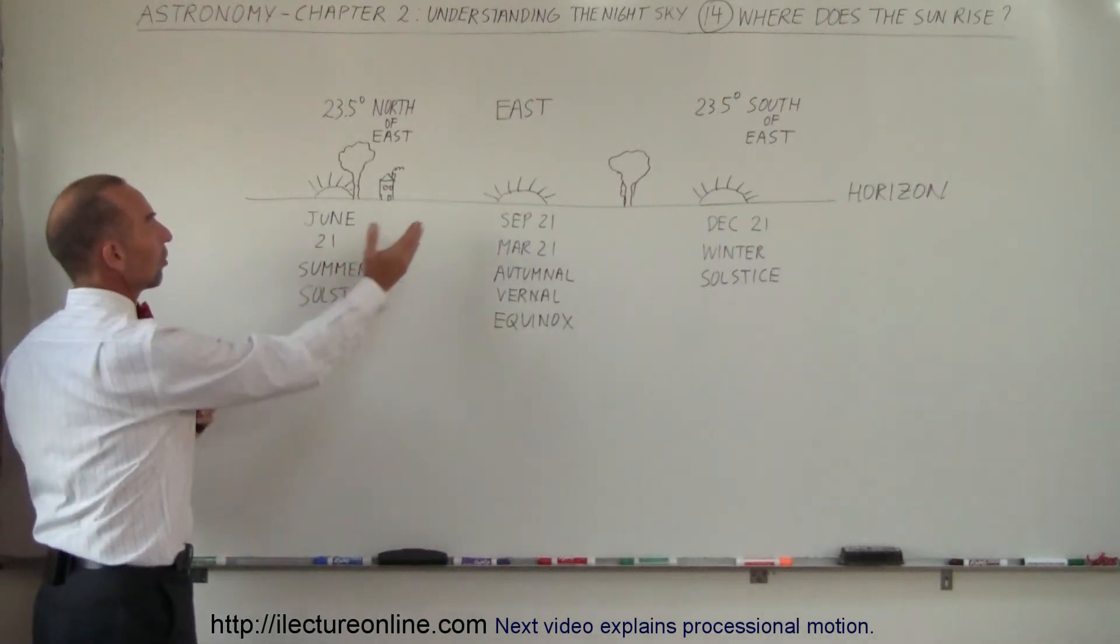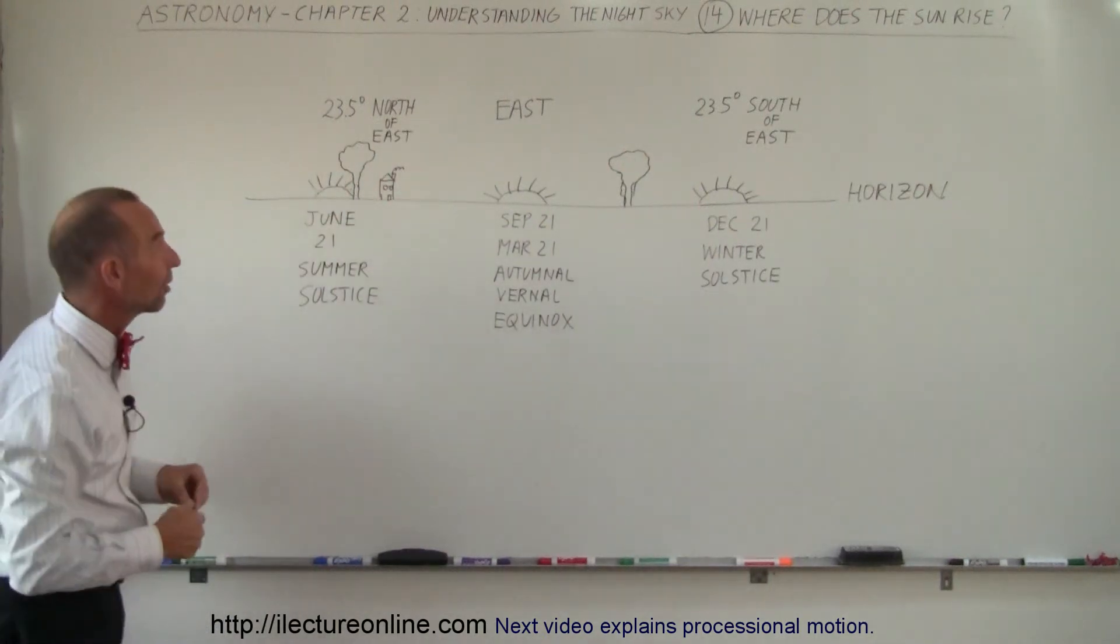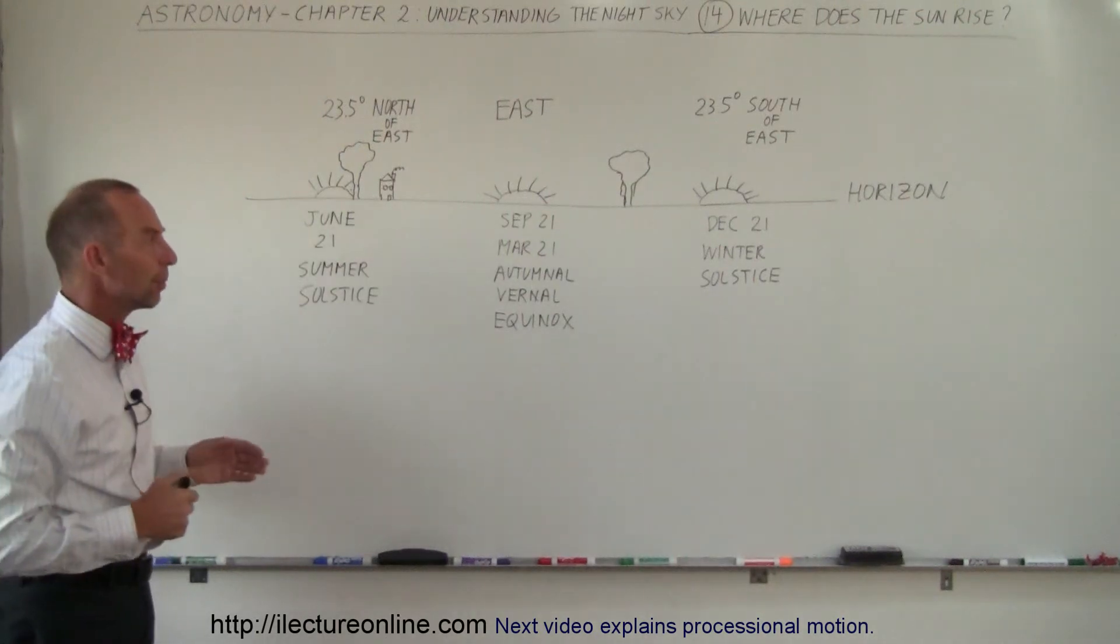On June the 21st, the sun will rise the furthest north of east, 23.5 degrees, and of course that is where we find the Tropic of Cancer. And that's then the beginning of summer.